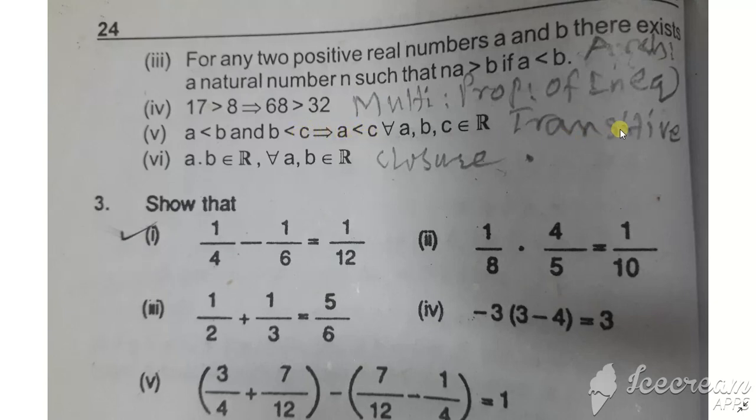Part v and vi discuss the closure property. When a set is closed under an operation, the result stays within that set. This is the closure property.